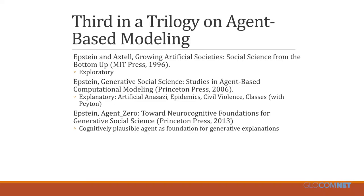The first of which was Growing Artificial Societies, which was really a sort of exploratory work. And then another book, Generative Social Science: Studies in Agent-Based Computational Modeling, which is a collection of much more focused explanatory exercises — the reconstruction of an ancient civilization, generating epidemics, civil violence, economic classes. And then this book, Agent Zero.